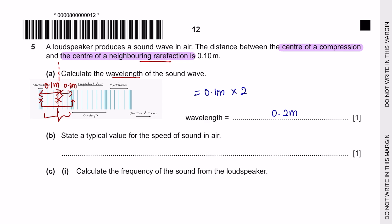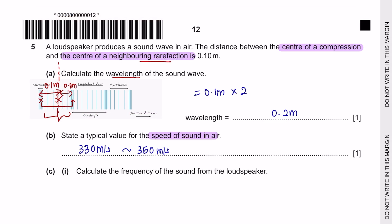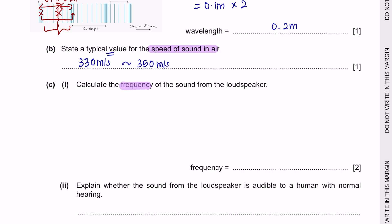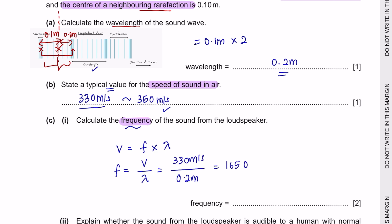Part B: state a typical value for the speed of sound in air. The speed of sound in air is approximately 330 to 350 m/s — you must remember this. Part C, part 1: calculate the frequency of the sound. Using v = fλ, rearranging gives f = v/λ. Using 330 m/s gives 1,650 Hz and using 350 m/s gives 1,750 Hz, so any value in this range is acceptable. To 2 significant figures, the answer is 1,700 Hz.